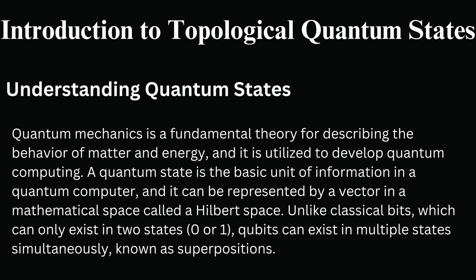Introduction to Topological Quantum States — Understanding Quantum States. Quantum mechanics is a fundamental theory for describing the behavior of matter and energy, and it is utilized to develop quantum computing. A quantum state is the basic unit of information in a quantum computer, and it can be represented by a vector in a mathematical space called a Hilbert space. Unlike classical bits, which can only exist in two states — 0 or 1 — qubits can exist in multiple states simultaneously, known as superpositions.